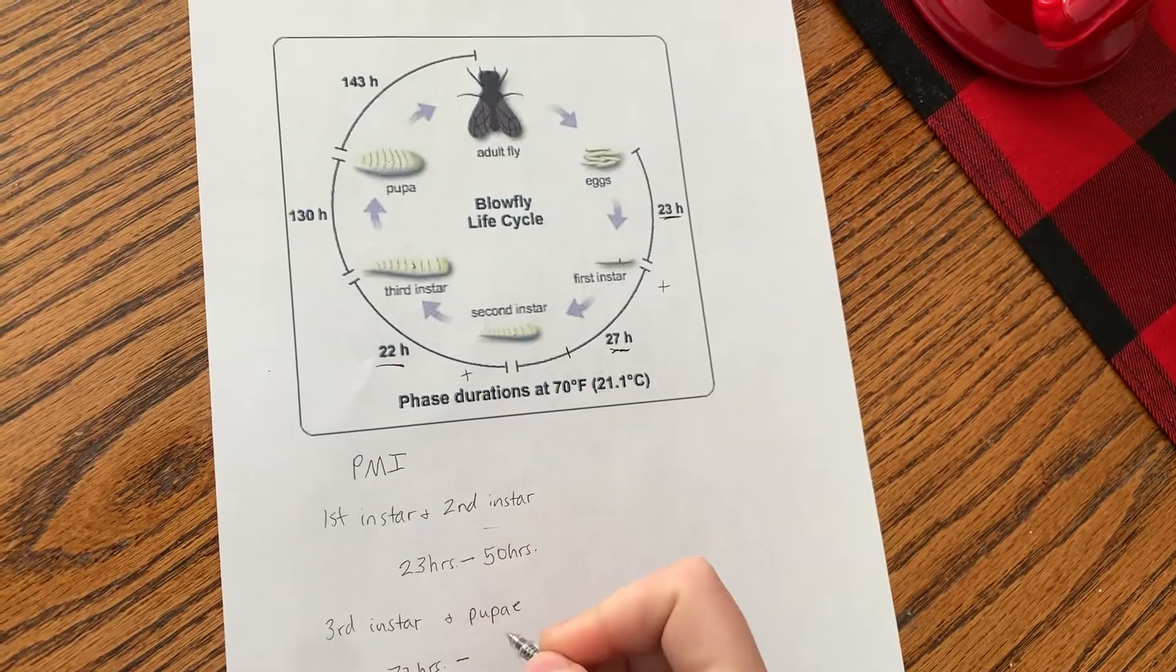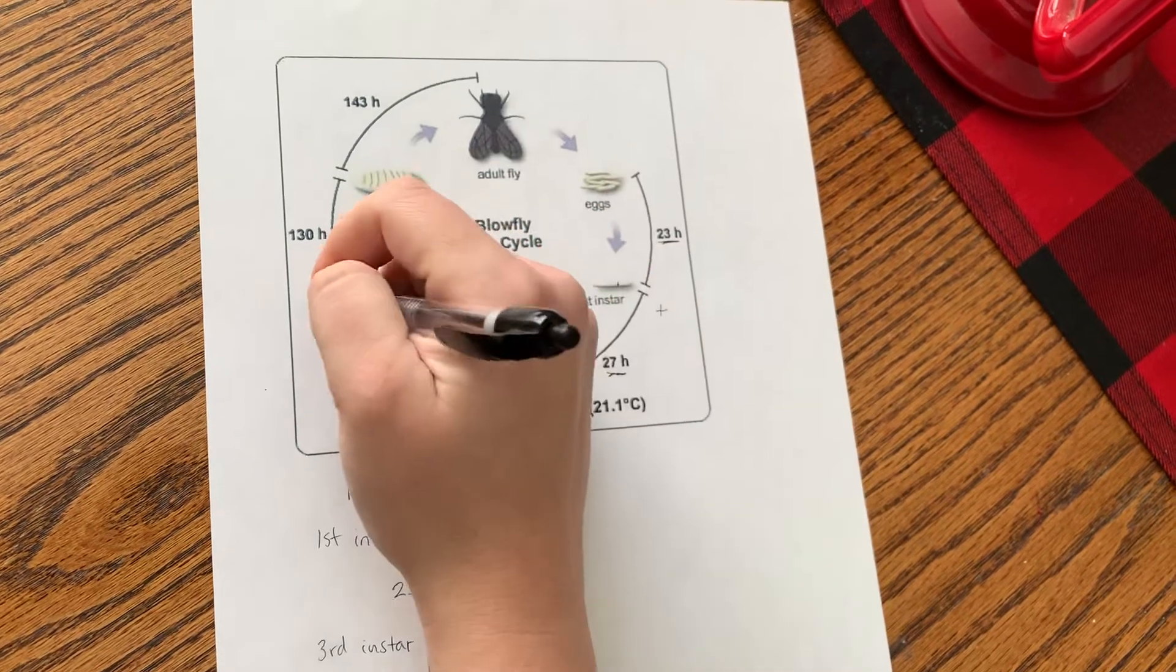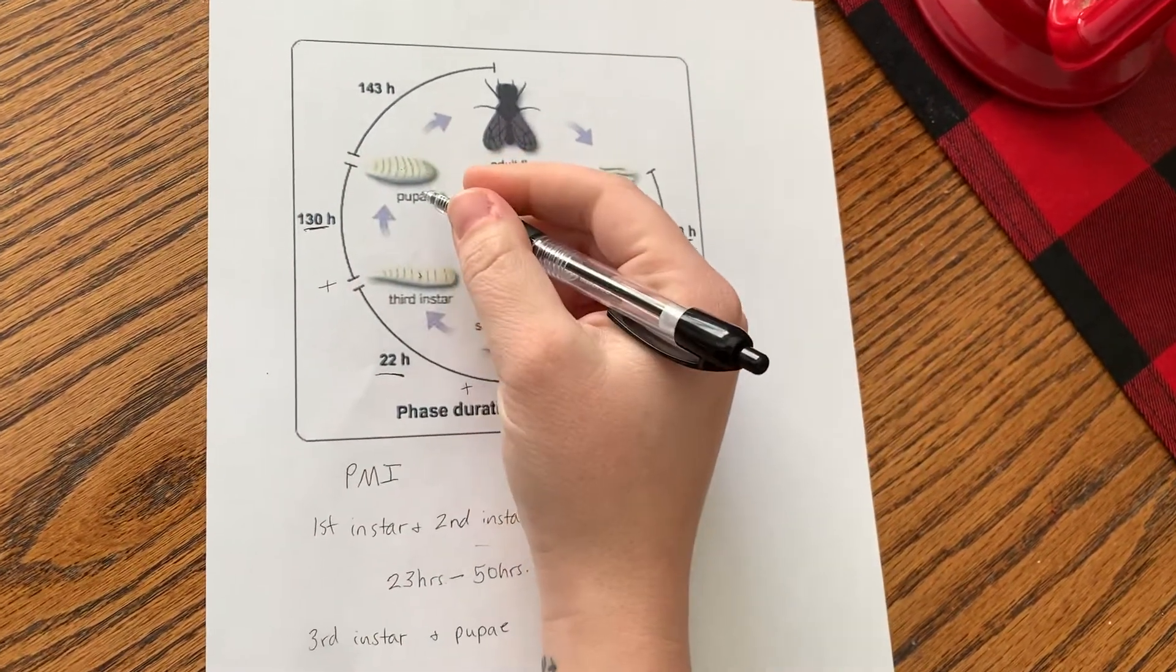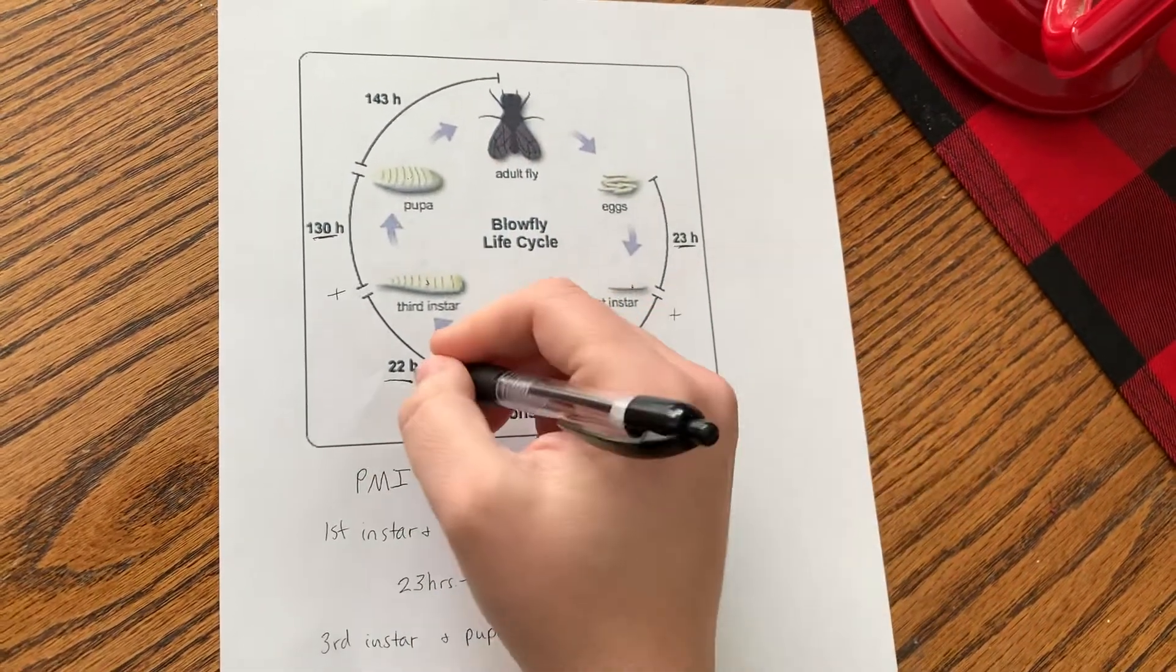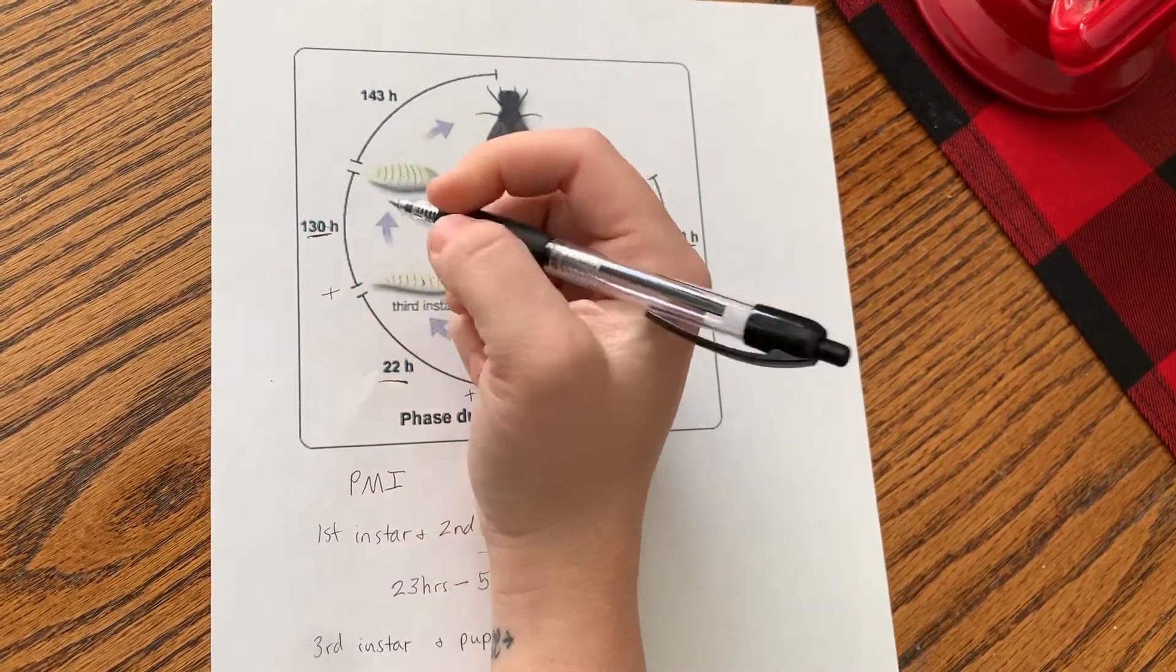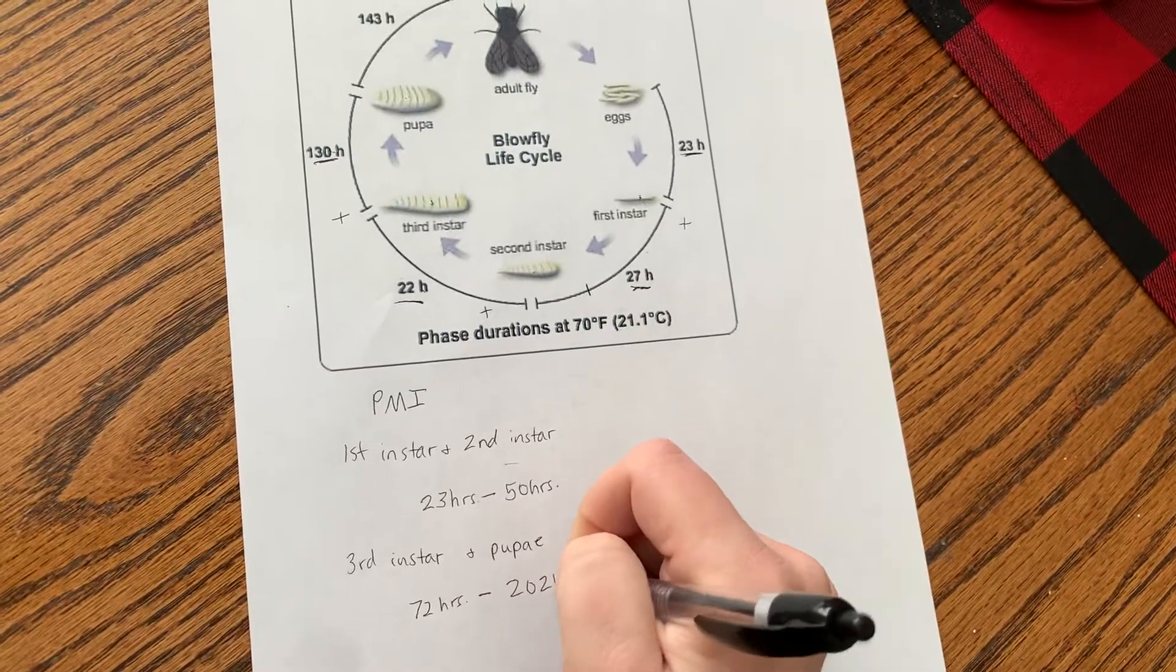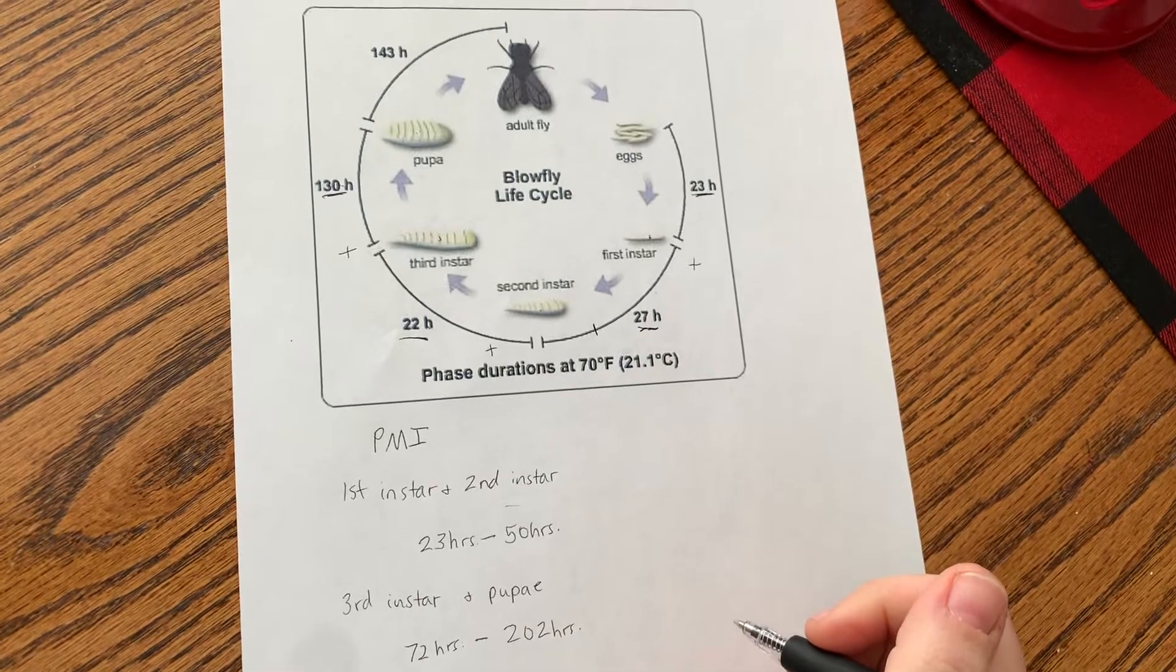However, it could be as long ago as all of this plus the time that it takes to become a pupa because we do have some pupae that are present at the body. So then we're going to take 72 hours because it took us from here to here to here to get 72 hours plus this window of time, 130 hours, and that's going to give us 202 hours. So that's the window of time that the person could have died.